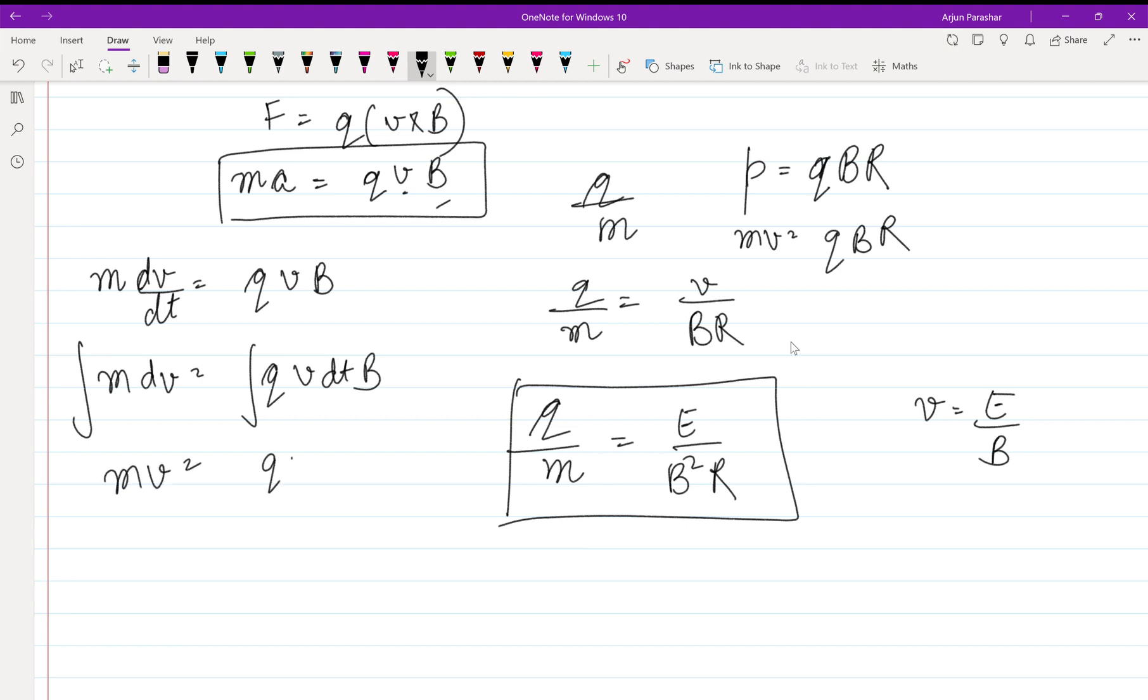We know that distance equals speed into time, so this becomes R. We get qRB = mv.